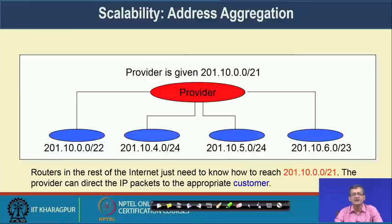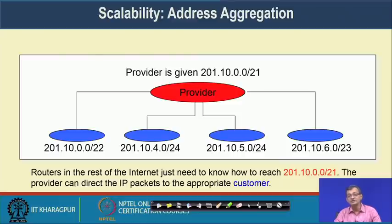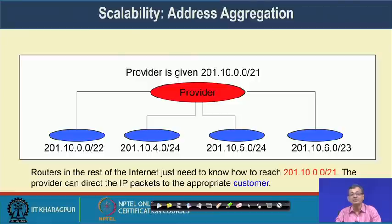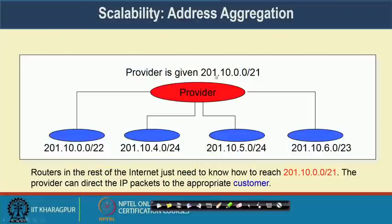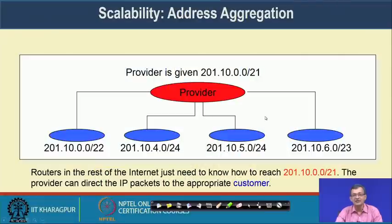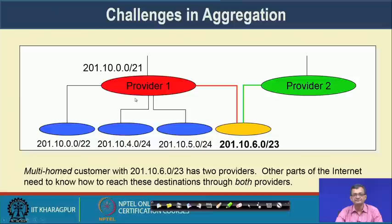We can have aggregation: if there are networks like 201.0.0/24, 201.0.22/24, 201.0.23/24, we can have an aggregated network of 201.10.0.0/21. Routers in the rest of the internet only need to know 201.10.0.0/21; the rest is handled at the lower level inside that domain. The provider can direct IP packets to the appropriate customer, and routers only need to know this higher-level IP.